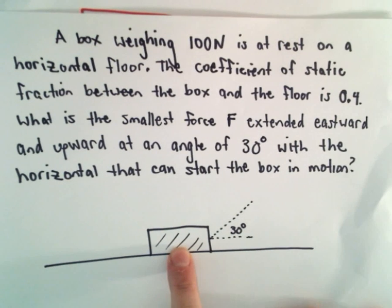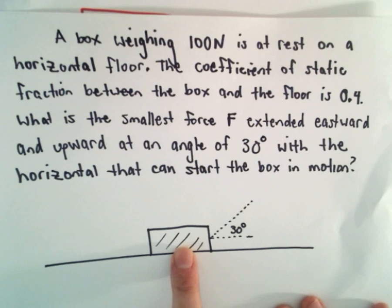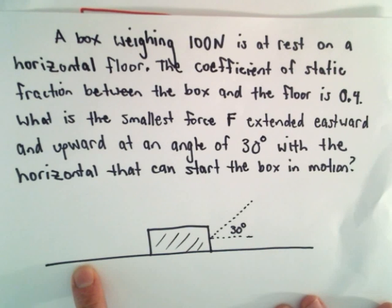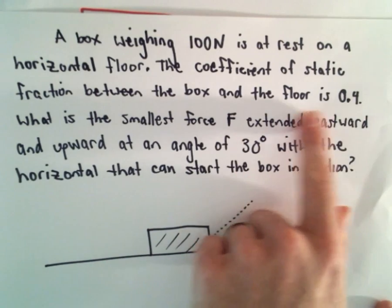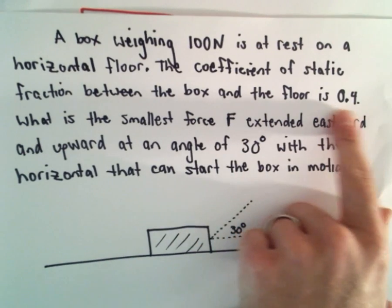Okay, so we've got a box weighing 100 Newtons, and it's currently at rest on a horizontal floor. And the coefficient of static friction between the box and the floor is 0.4.